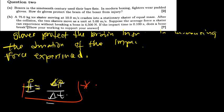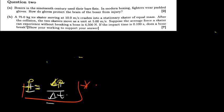Now let us go ahead and also do part B. Part B is saying a 75 kg ice skater moving at 10 meters per second crashes into a stationary skater of equal masses. After the collision, the two skaters move as a unit at 5 meters per second. Suppose the average force a skater can experience without breaking the bone is 4500 newtons. If the impact time is 0.100 seconds, does the bone break? So it's just a matter of us finding the force. If that force is going to be greater than 4500, then the bone is going to break. If the force is going to be less than 4500, then the bone did not break.